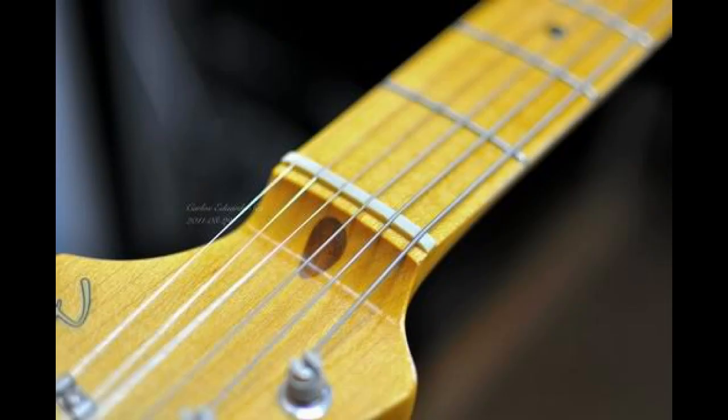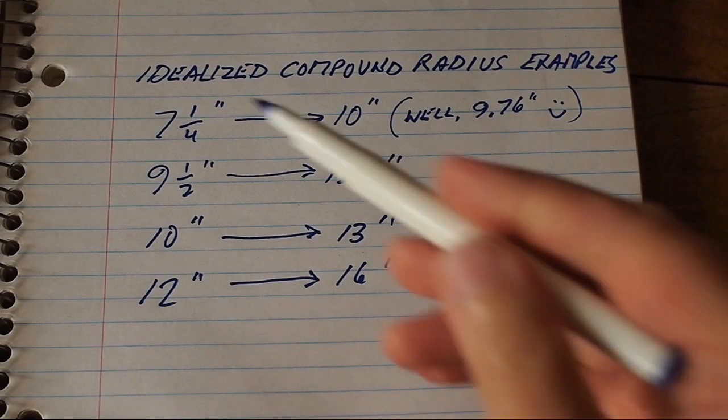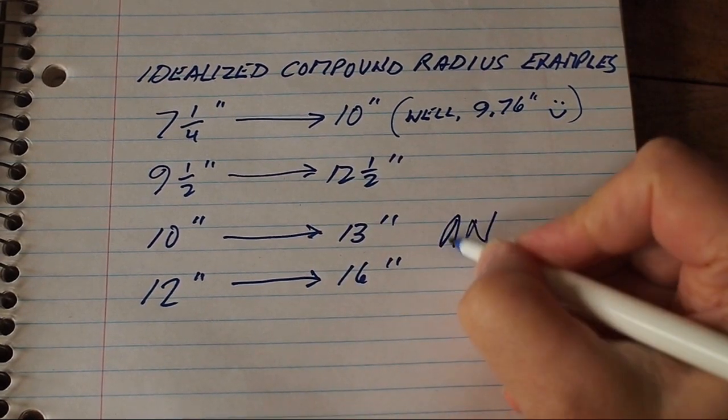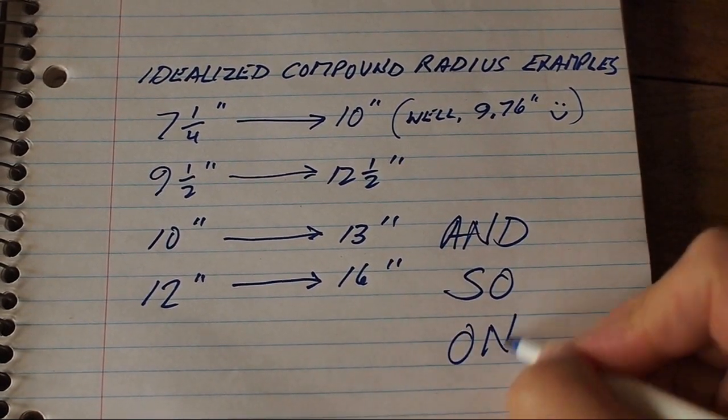Now let's take a vintage Fender for example. You've got a radius at the nut of 7¼ inches. In order to have even action across that fretboard, the radius at the 21st fret should be about 10 inches.